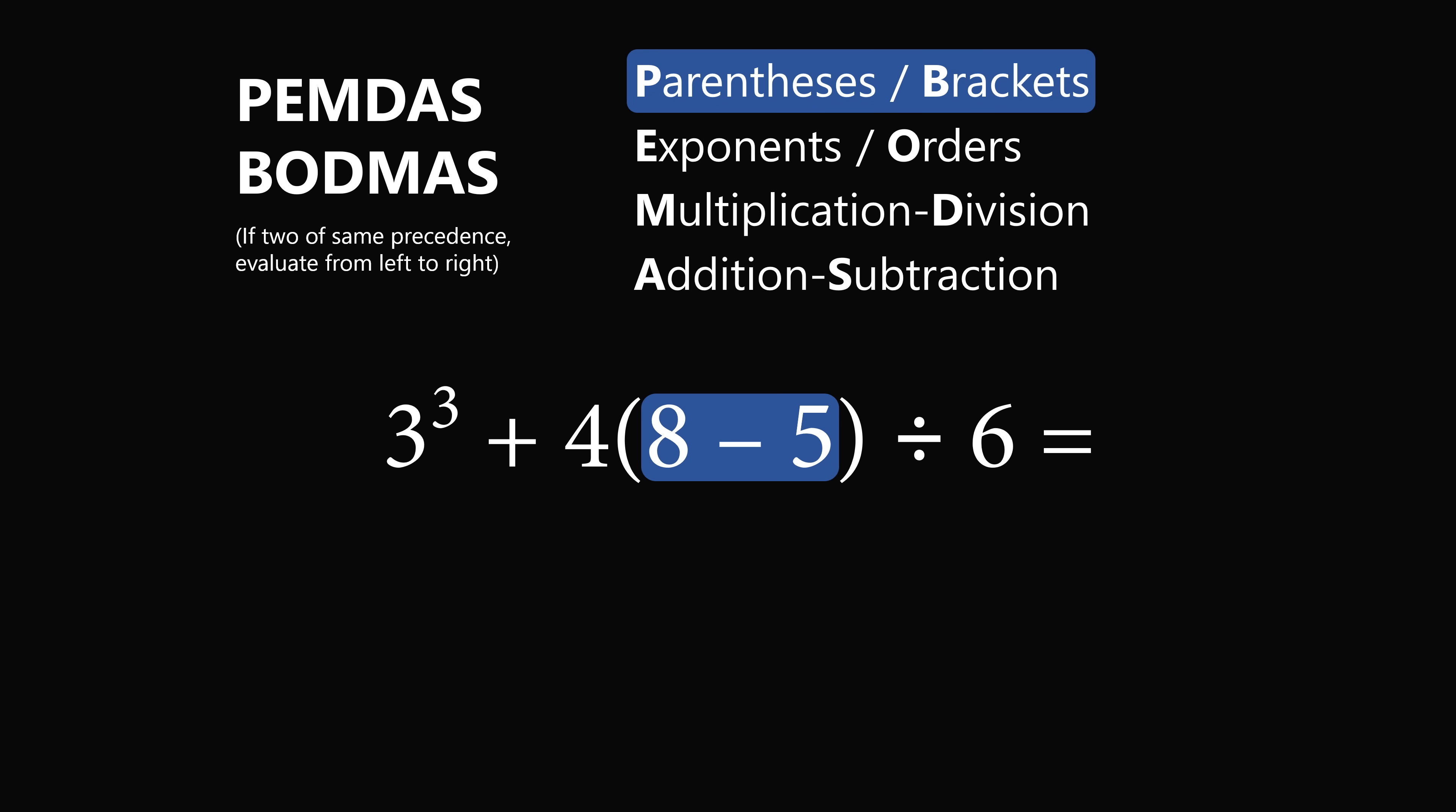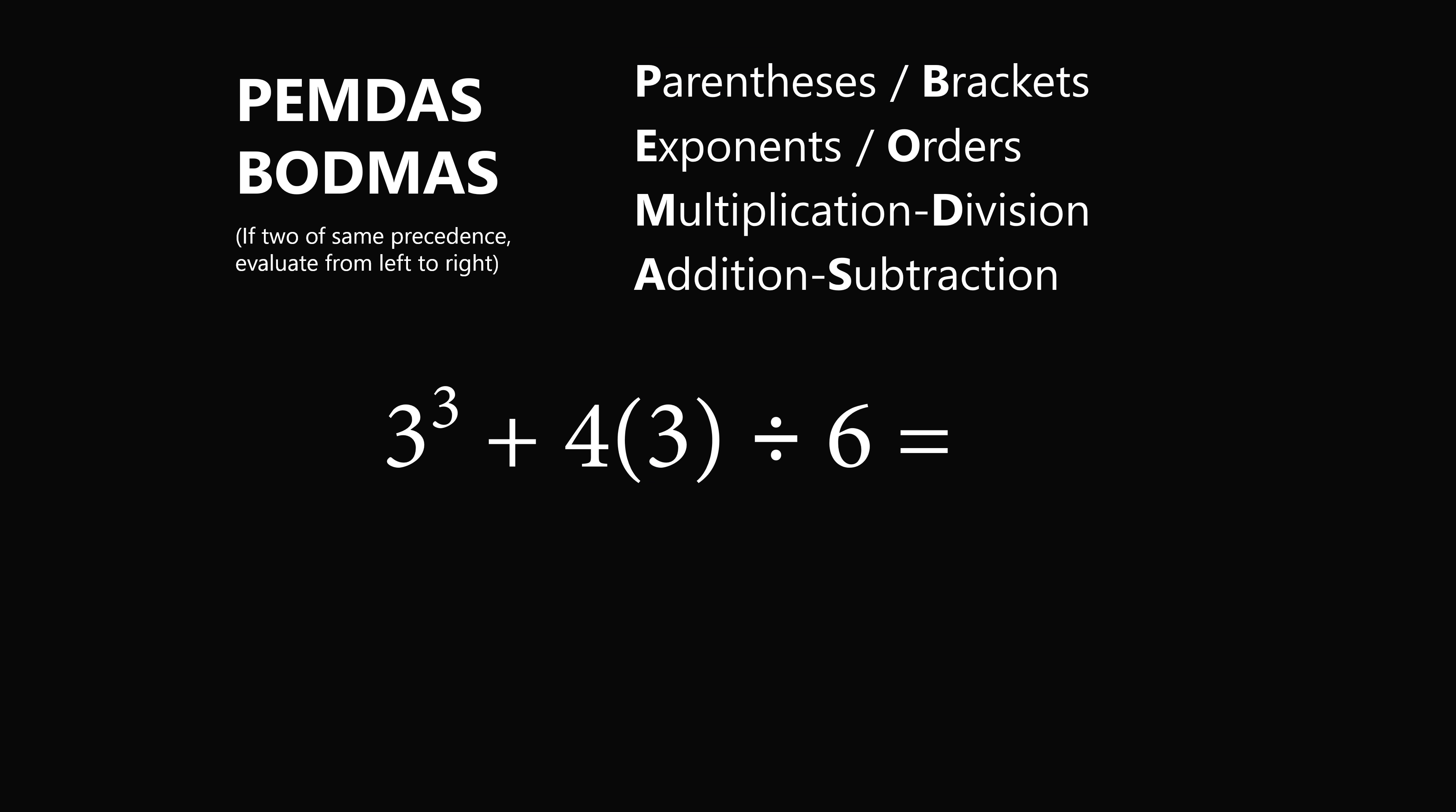First, we have a parenthetical expression of 8 minus 5. This is equal to 3, so we'll substitute in. Then, we have an exponent of 3 to the power of 3. That's equal to 27.